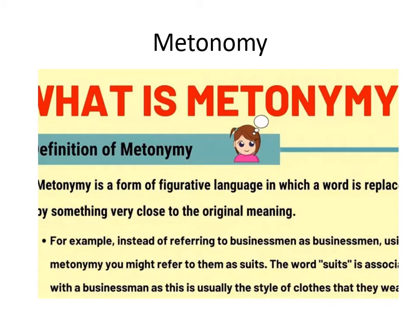Metonymy is a form of figure of speech in which a word is replaced by something closely associated with it. For example: 'crown.' Crown does not only refer to a head accessory — crown means responsibility, power, and royal power — the power of a king.